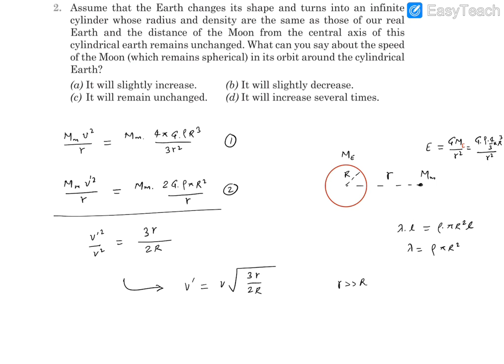Now if this earth reshapes itself into an infinite cylinder, a similar view will be again there. Let's say now this is indicating a cylinder which is running into and outside the screen and this is the distance from the axis and this is going to be the orbit on which the moon is going to move. This distance is not changing, that means orbital radius is not changing.